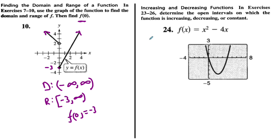Next, increasing and decreasing functions. We've got a quadratic, and we know that it's decreasing up until a point and then increasing. Remember, increasing and decreasing is always in terms of x. It turns out the breakpoint is at x = 2.